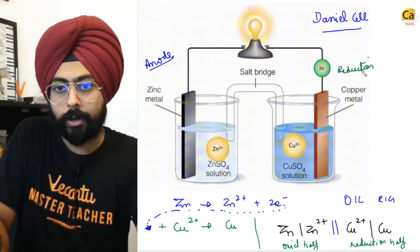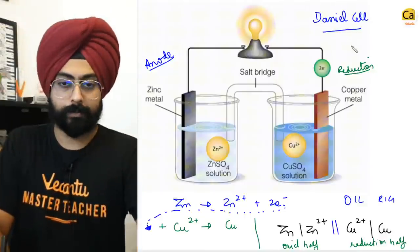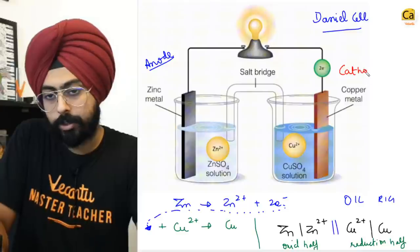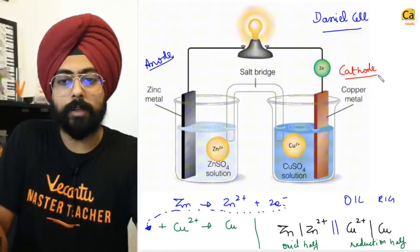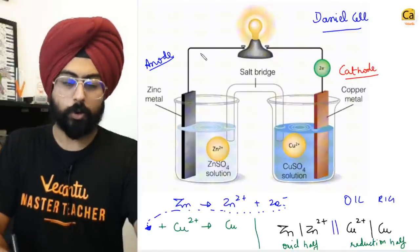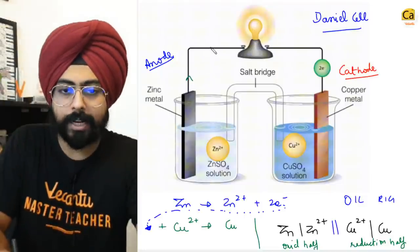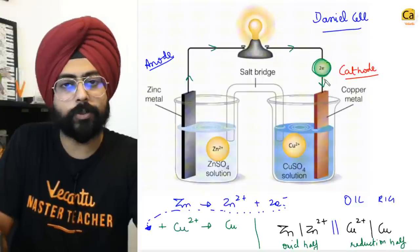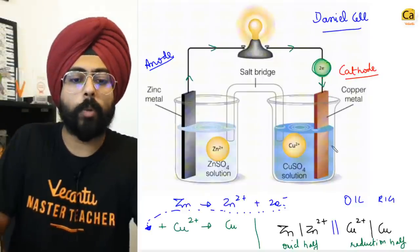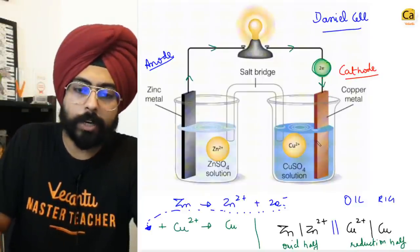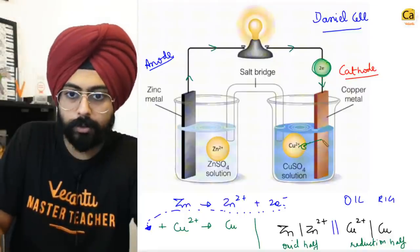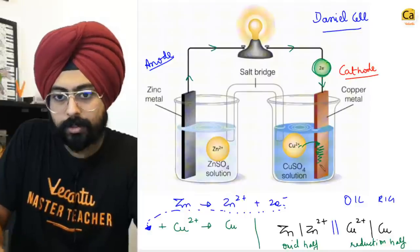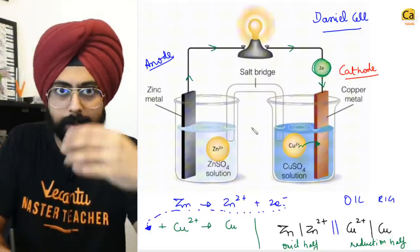Cathode is always the place where reduction happens. So on the right-hand side is your cathode. Zinc is providing the electrons; copper is capturing those two electrons, becoming deposited onto the surface. Zinc will get depleted from the surface.